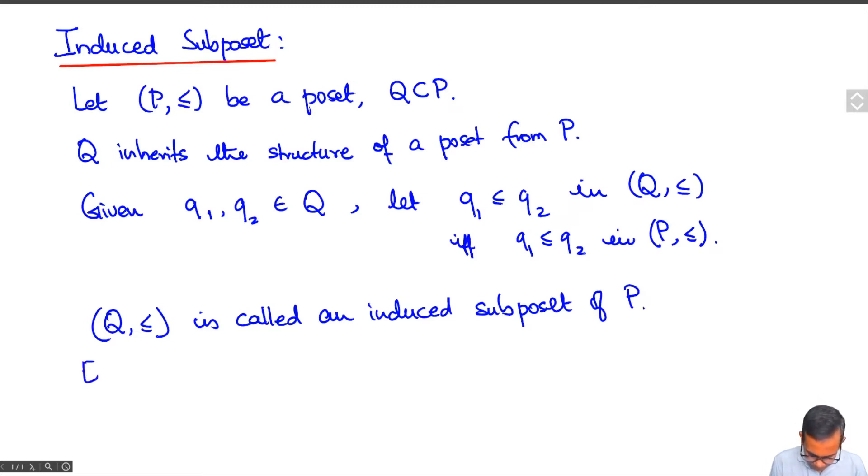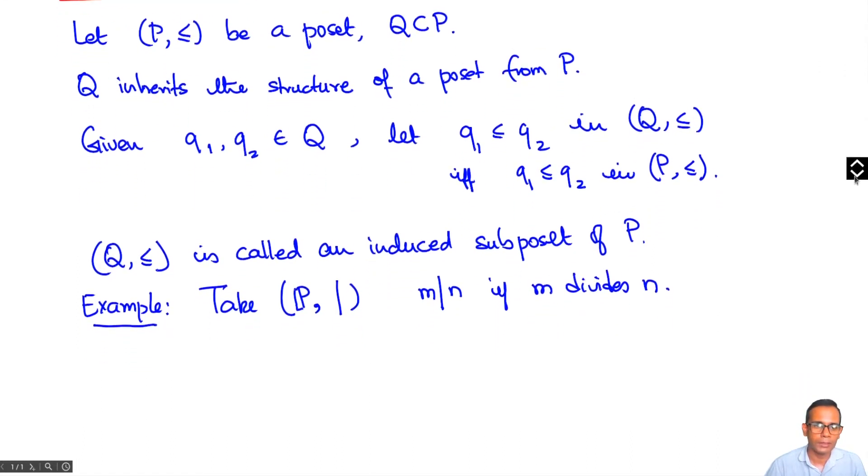Let's take an example. So let's take positive integers. And remember, this has two interesting partial orders. One is the total order, the usual order, but then there's the divisibility order, which today I'll denote by a vertical line. If M divides N, we've seen that this is a partial order on the set of all positive integers.